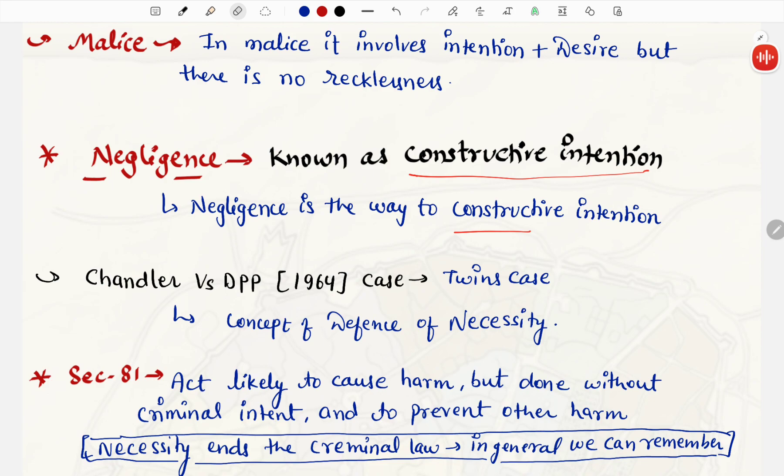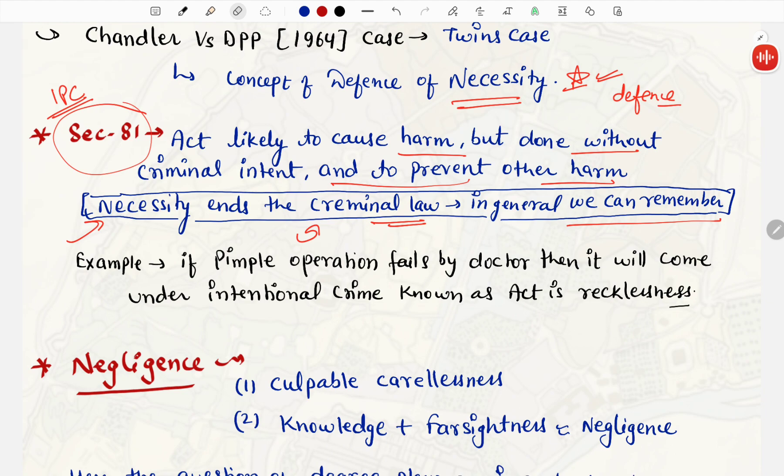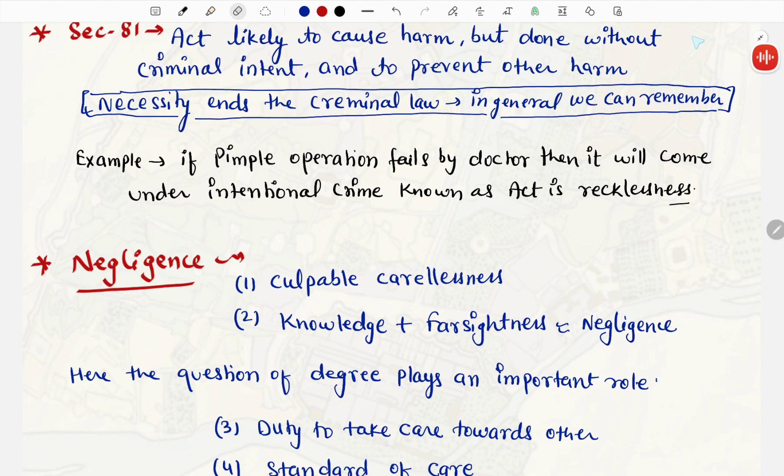Uske baad ek word aata hai, negligence. How to understand negligence? Known as constructive intention. Constructive intention ko bhi negligence kehte hai. Negligence is the way to constructive intention. Uske baad, yahan par ek case bhi tha, Chandler versus DPP 1964 case, jo tha twin case. Concept of defense of necessity, yahan par aata hai, is case ke baare me, in depth discussion karenge, case law ke andar.